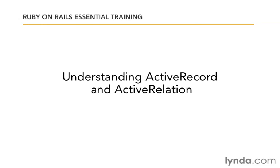Active Record and Active Relation are the part of the Rails framework that's going to power our models. Before we begin coding our models, let's first get a big picture understanding of what Active Record and Active Relation are.